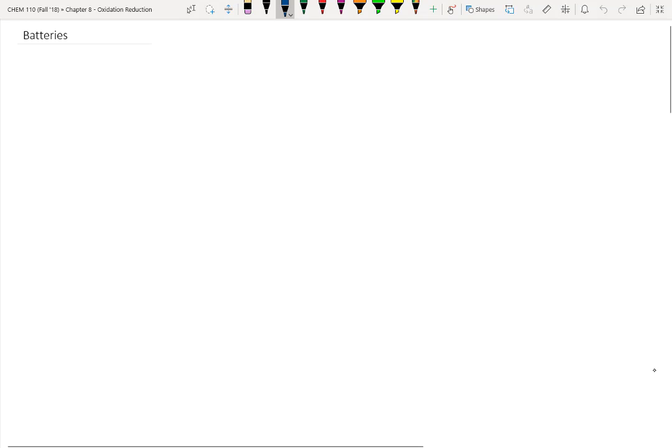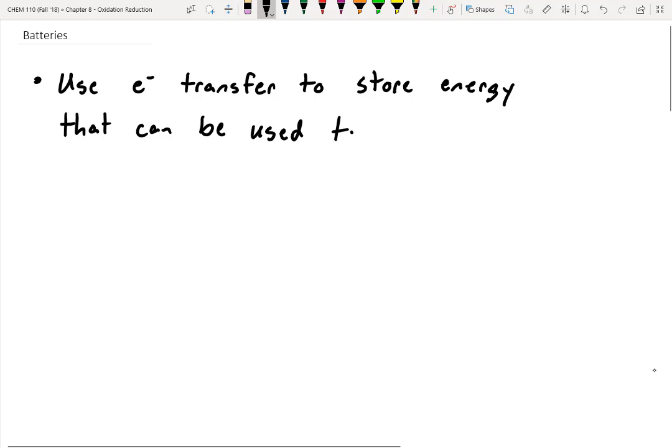Alright, so today we're going to wrap up our redox chapter talking about batteries, and you actually got a chance to make some batteries in lab last week. Batteries are pretty unique - they're where you can use electron transfer to store energy that can be used to do work.